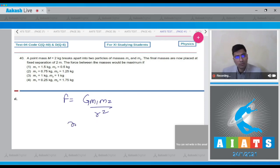And hence this means that the force will be maximum when m1 is equal to m2, and that will be equal to capital M by 2, that is 1 kg. Hence for this question, the correct answer is option 3.